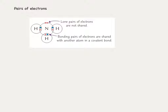The shape of any molecule is determined by the number of pairs of electrons around the central atom. It's important that we can identify whether we have lone pairs or bonding pairs of electrons. In this example we've got ammonia, which has two types of pairs of electrons. At the top it has one lone pair of electrons, which are unshared and not taking part in bonding.